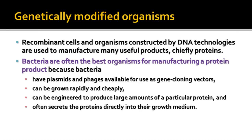Bacteria are often the ones used and really the best for doing this because they're easily handled in the lab. They have plasmids that can be used as a vector, and sometimes bacteriophage viruses that can be used as a vector for gene cloning.